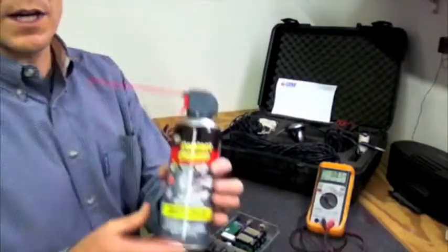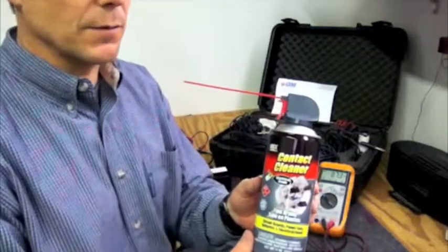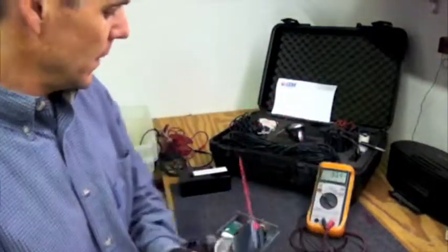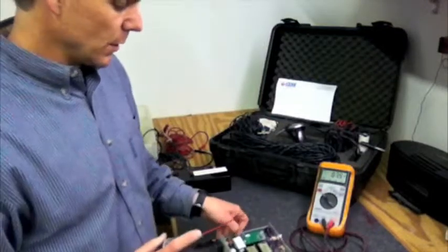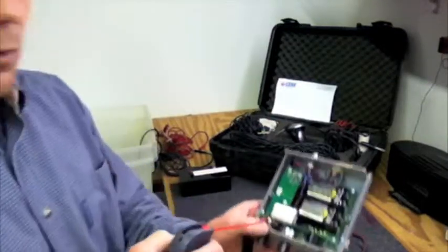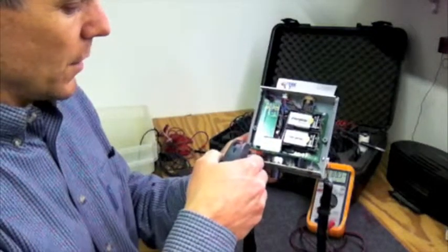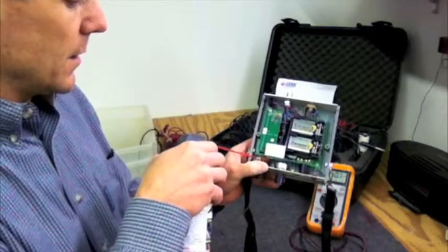We use some contact cleaner. This is the type of stuff that can be purchased from a Radio Shack or any electronic supply store. And we're just going to squirt a little bit right on the contact location there, inside these contacts.